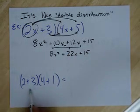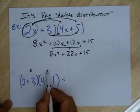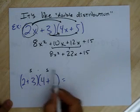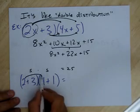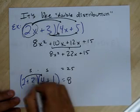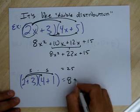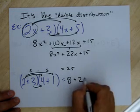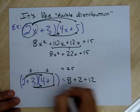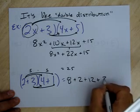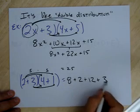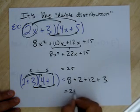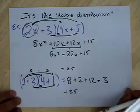This works with integers too. We know this number is 5, and this number is 5, and we know 5 times 5 is 25. Let's see how it works out with distribution: 2 times 4 is 8, 2 times 1 is 2, 3 times 4 is 12, 3 times 1 is 3. We're adding all of these terms together: 8 and 2 is 10, and this number here is 15. 10 and 15 is 25. See how nice that is?